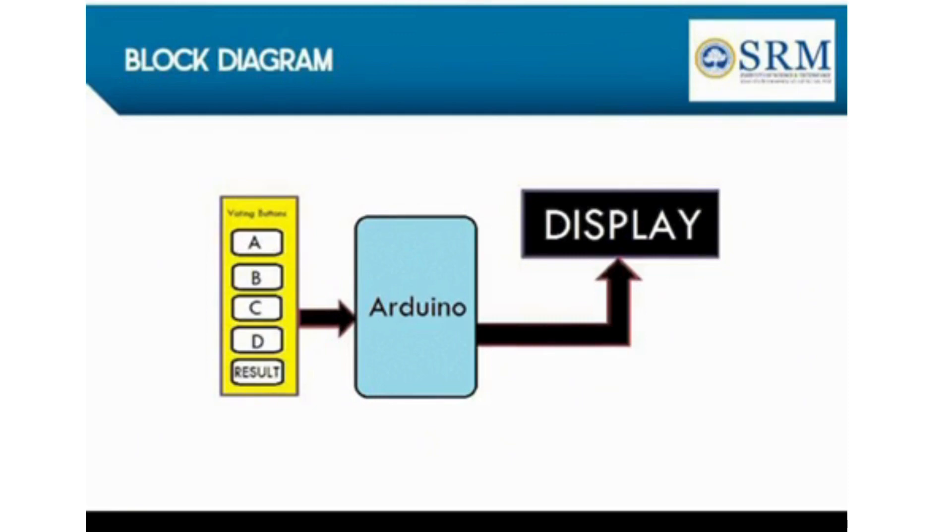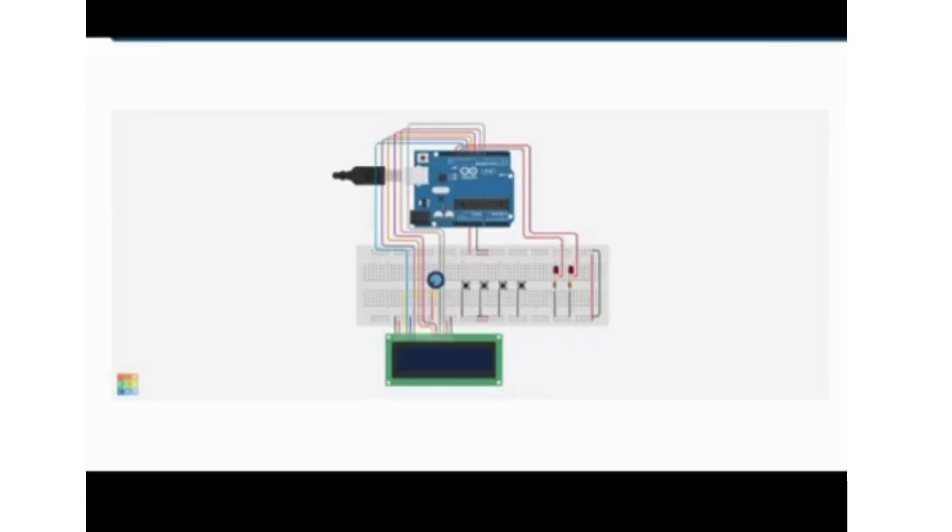The EVM records the vote electronically. It's designed to ensure that each voter can cast only one vote and that the vote is anonymous. The recorded votes are stored securely within the EVM until the end of the voting period. After voting concludes, the EVM is used to count the votes.